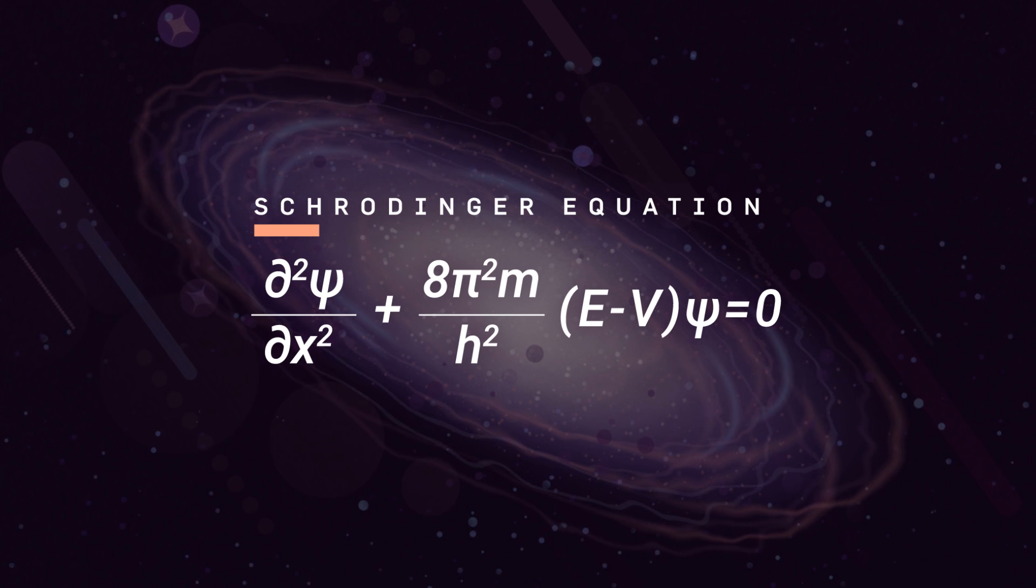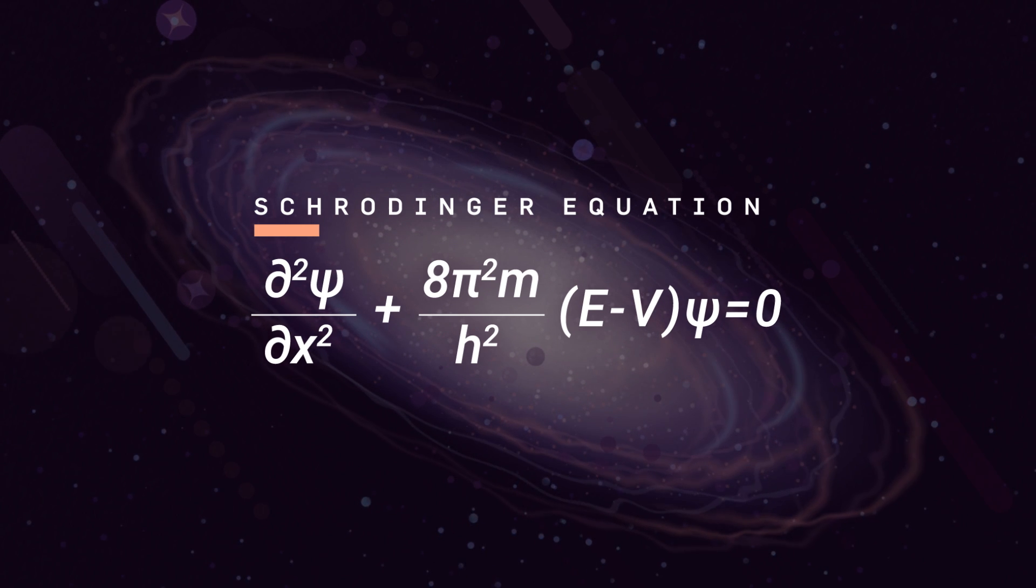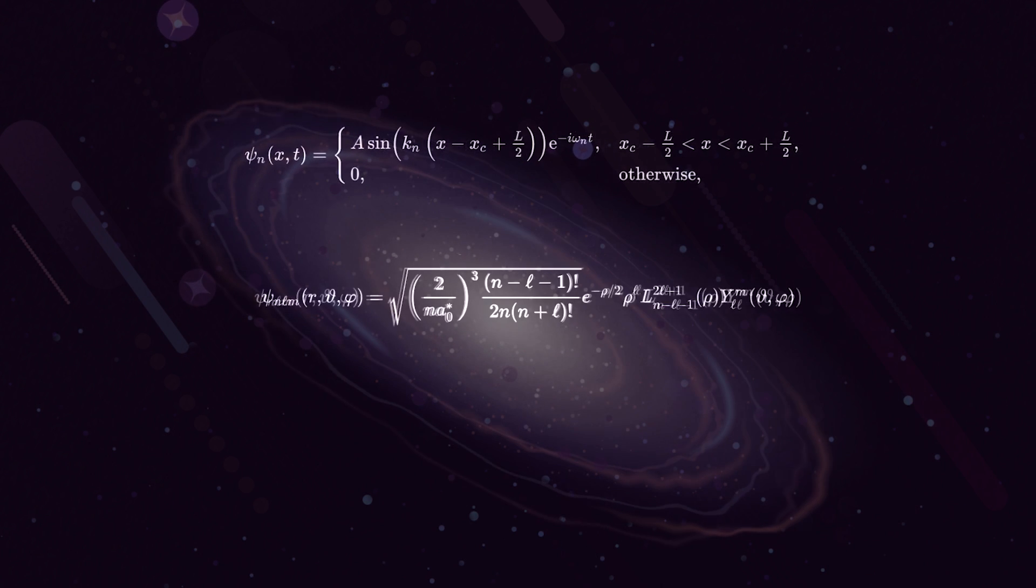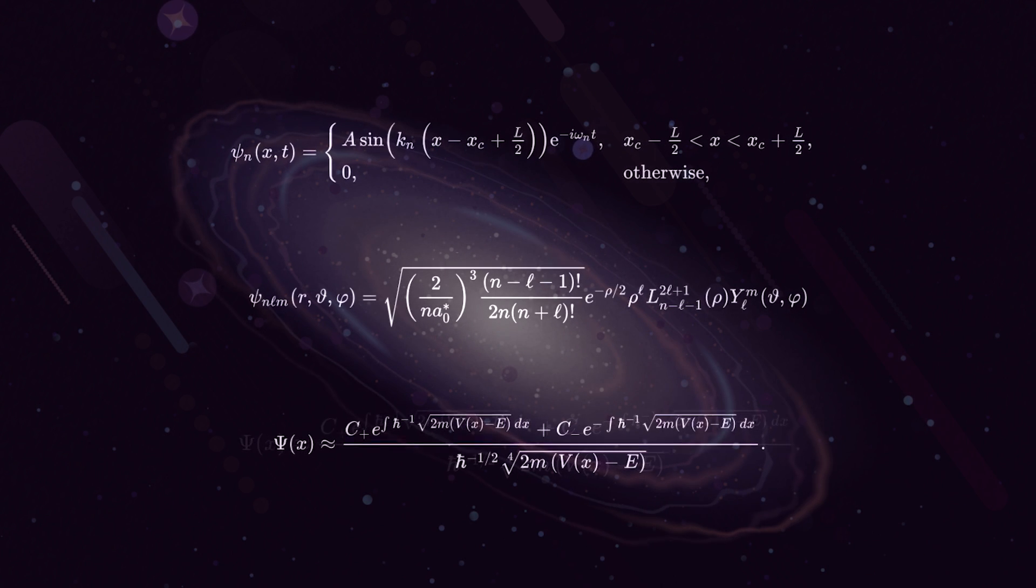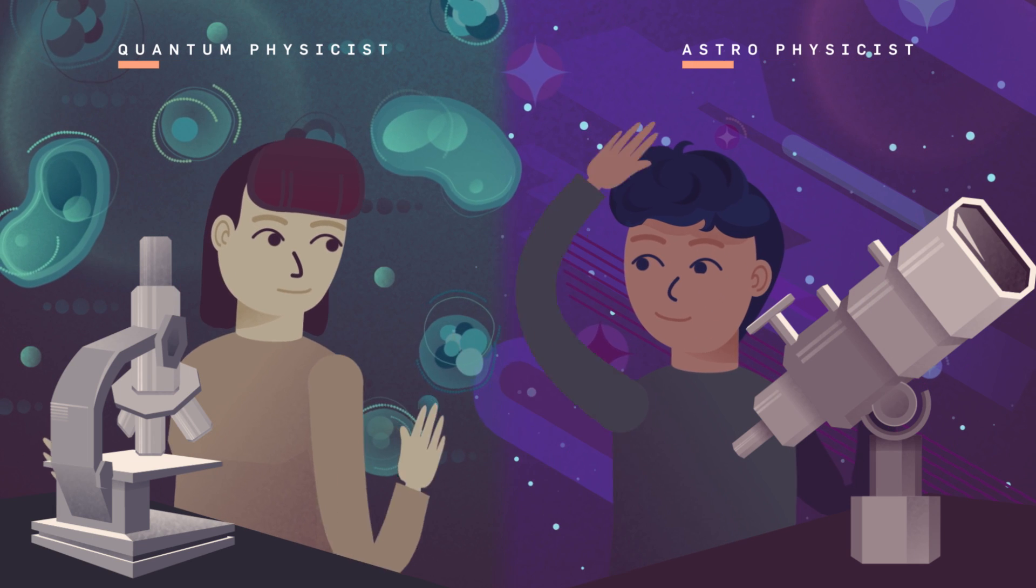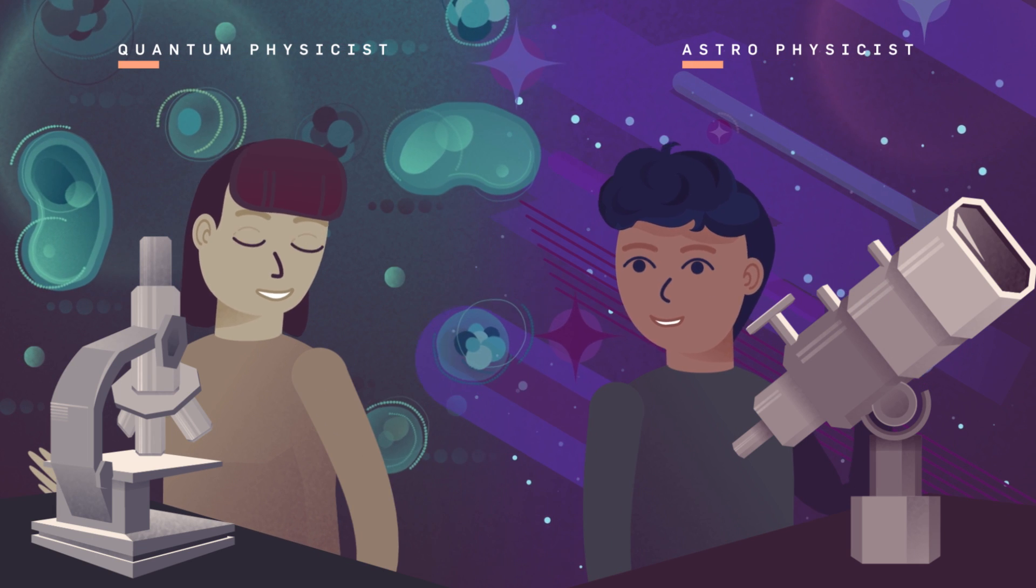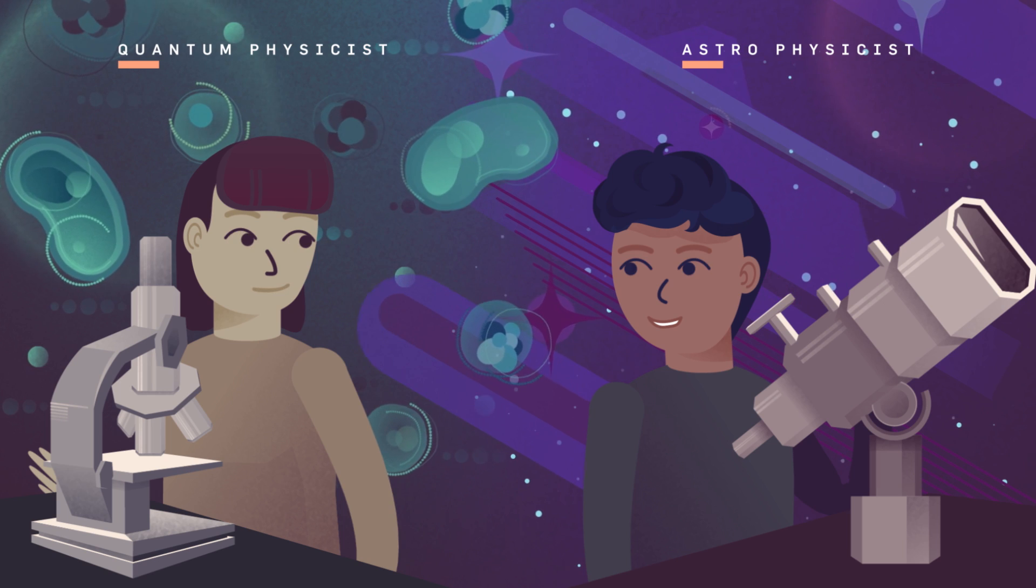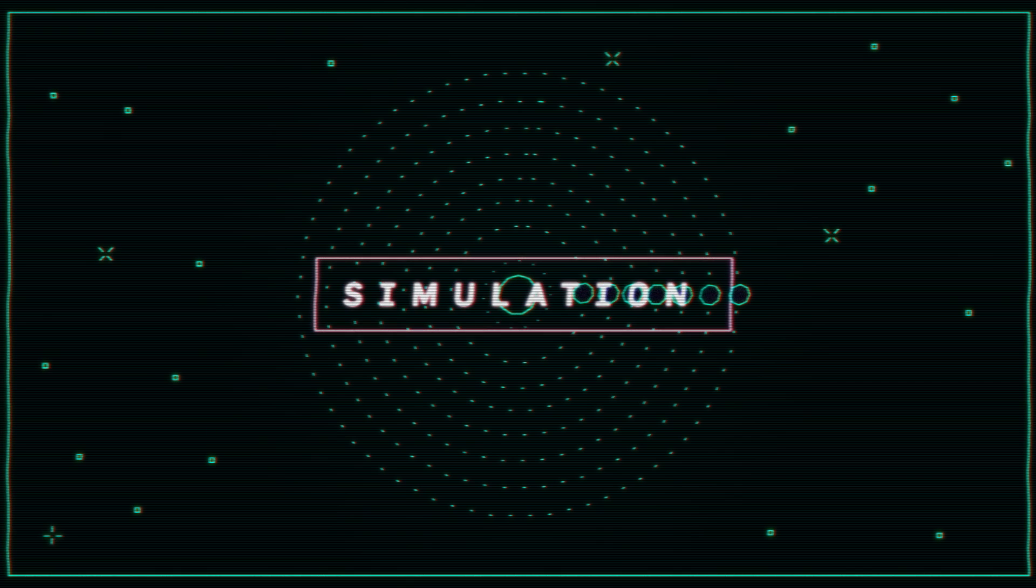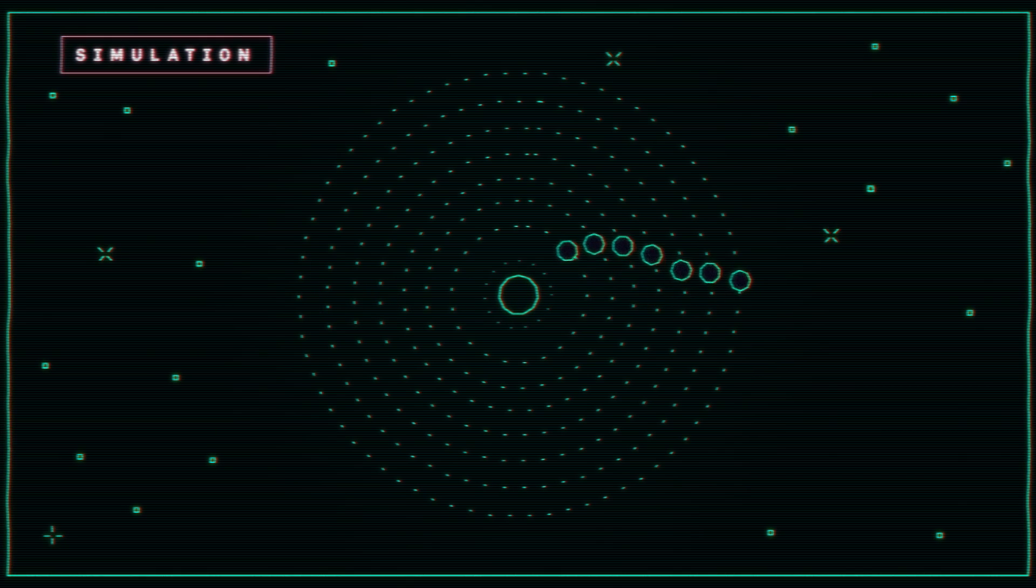The fact that the Schrodinger equation is relevant is important because we, over the last century, have developed many, many solutions to that equation. So we can now borrow from the mathematical realm of quantum mechanics.